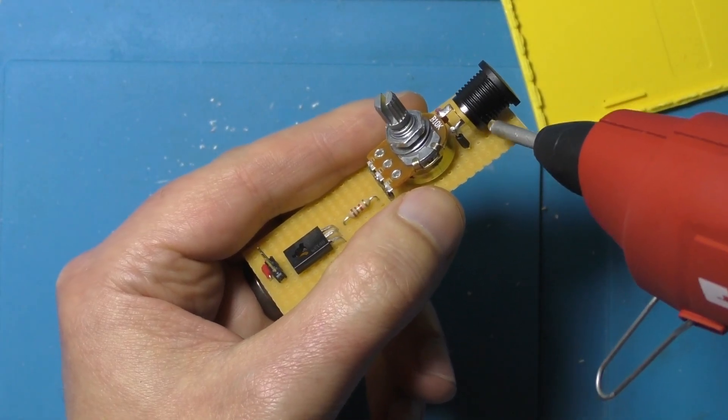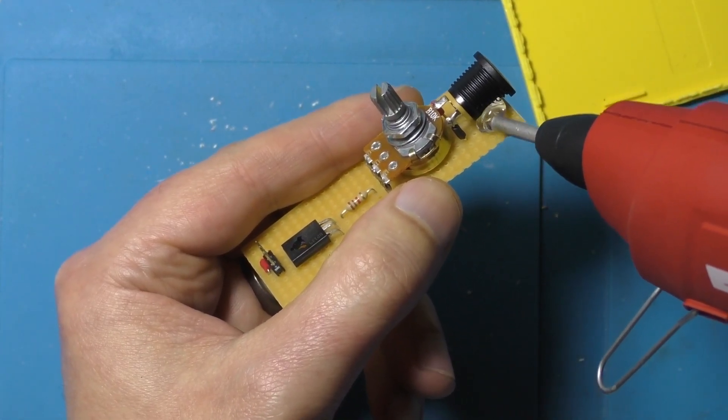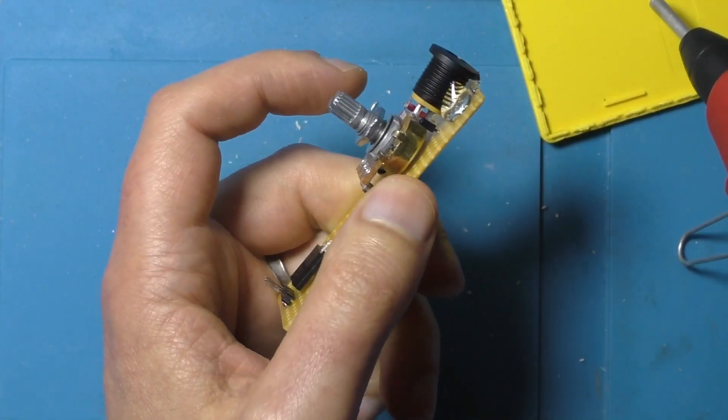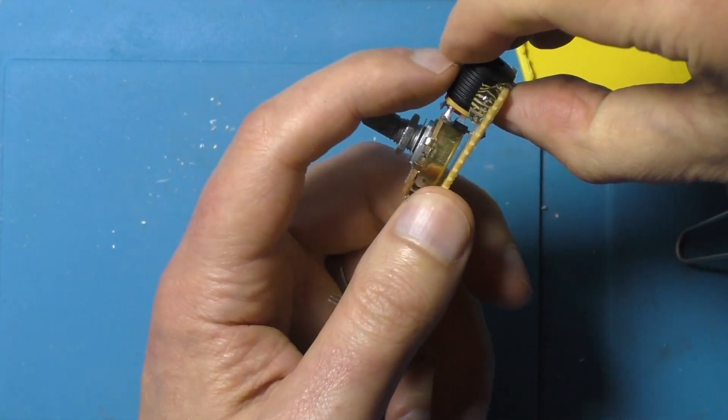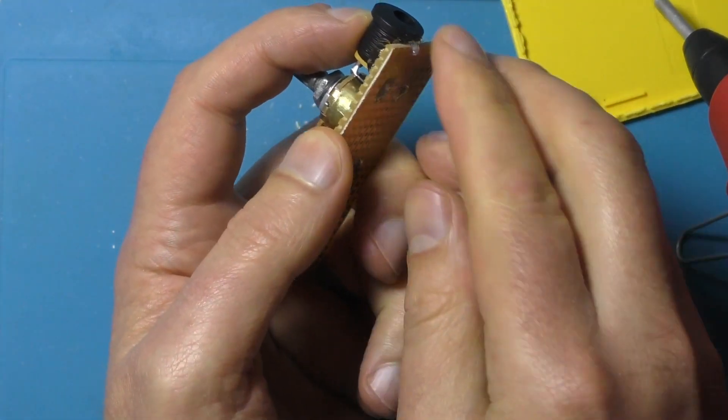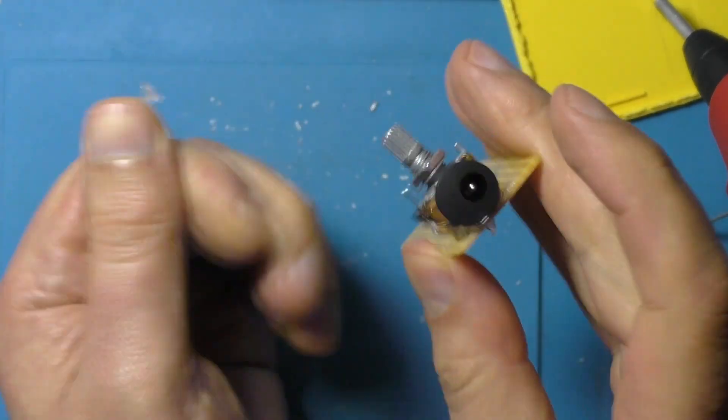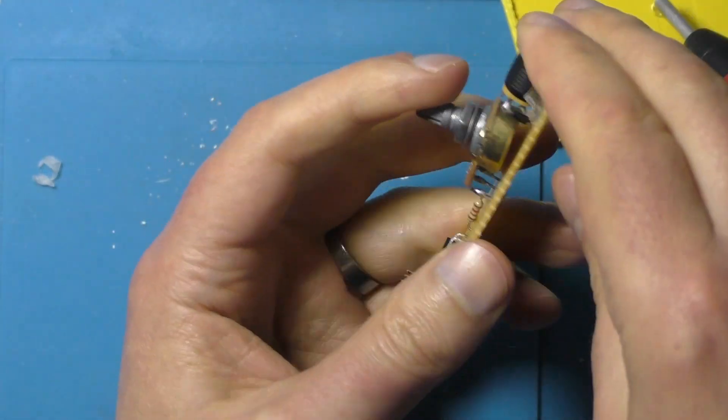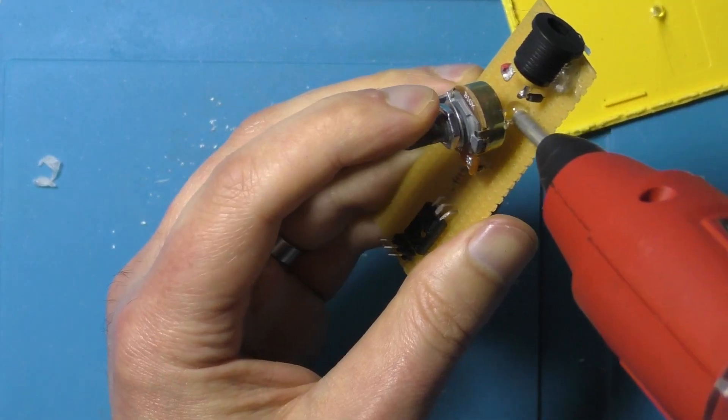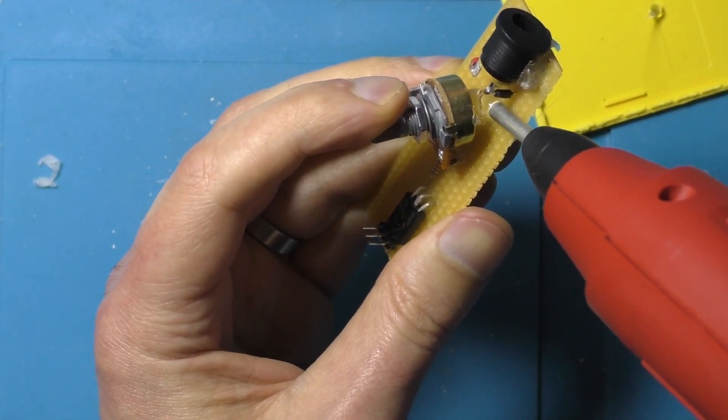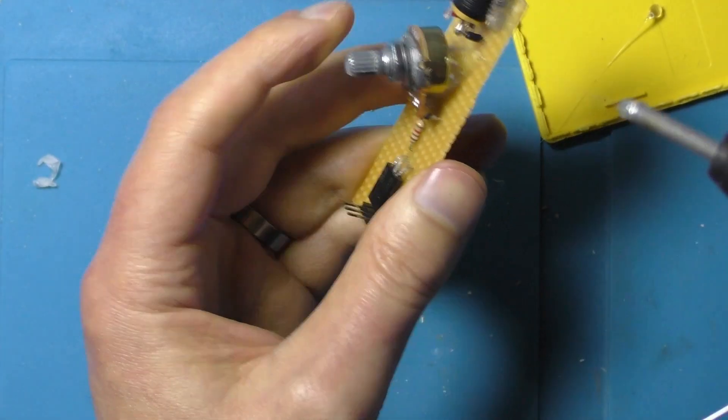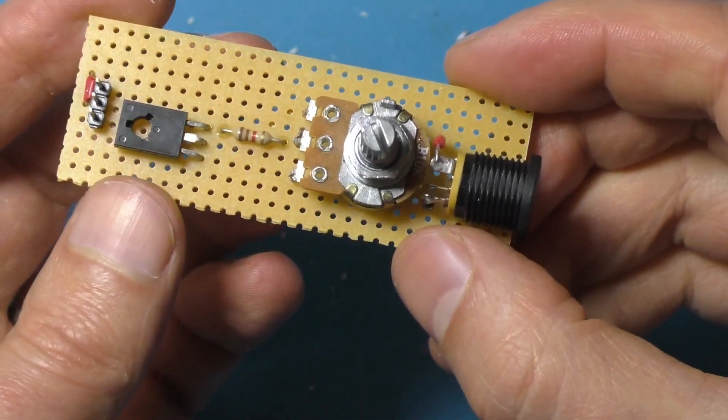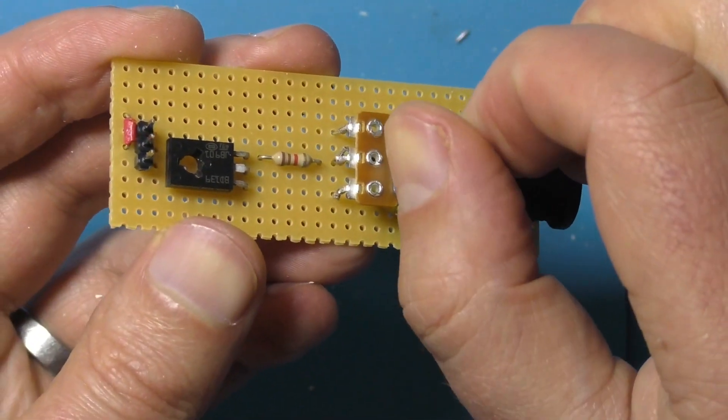And finally let's just glue down these bits so they're nice and secure. Bit of hot glue. No YouTube maker tutorials complete without a bit of hot glue. Right that's the completed design so let's try it out.